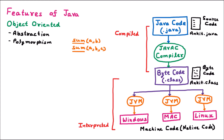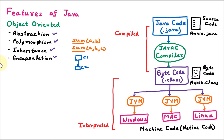Next is inheritance, which is used for reusability. If we have a class and we use that class's data in some other class, that is called inheritance — reusing existing code in another class. The next feature is encapsulation — wrapping up data members and functions inside a class. A class contains variables (data members) and functions (member functions), holding both together. So Java contains abstraction, polymorphism, inheritance, and encapsulation — that's why Java is an object-oriented language.